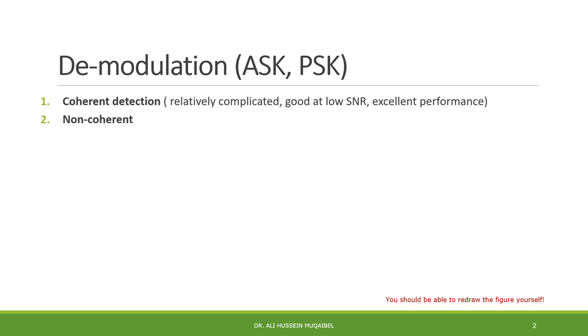How do we demodulate in general? We have two ways. Either we use coherent detection or non-coherent detection. Coherent means we require to generate locally the carrier with the same phase as the received one. Coherent detection is relatively complicated because of the carrier acquisition, and it's good at low signal-to-noise ratio, and it has excellent performance.